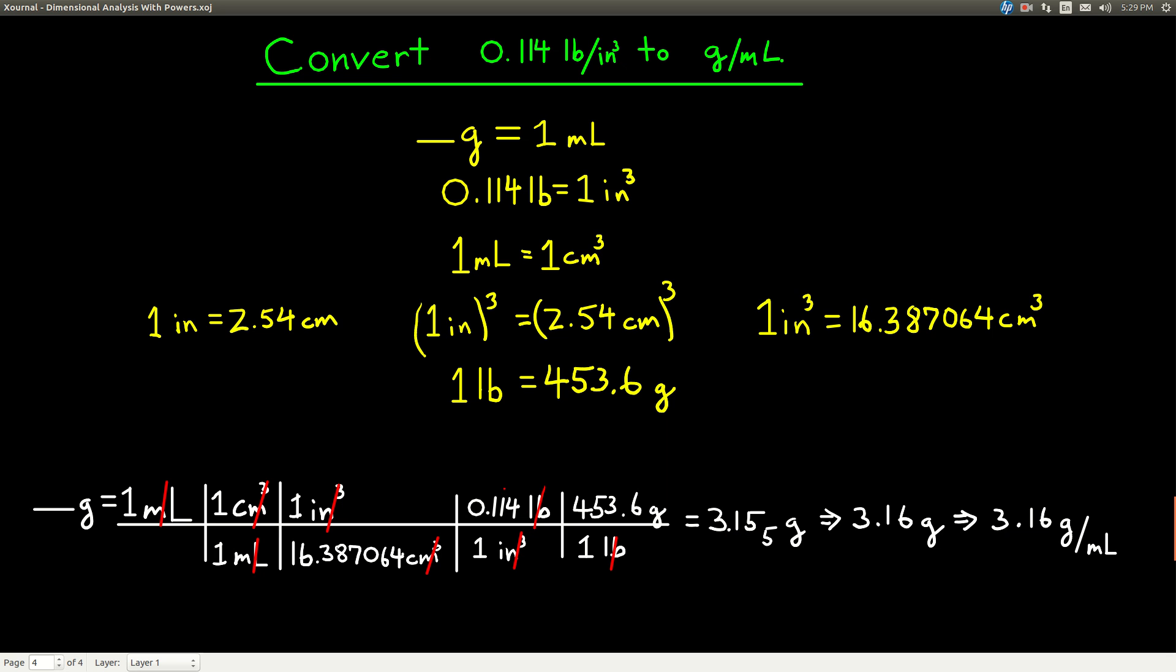Three sig figs because of the 0.114. Everything before that's exact. The 453.6 has four sig figs, so the least is three. And so my first insignificant figure is a 5. I put it as a subscript, then I round up, and I get 3.16 grams. So what did we just figure out? We figured out that for this substance, whatever substance has a density of 0.114 pounds per inches cubed, that density in grams per milliliter is 3.16 grams per milliliter.